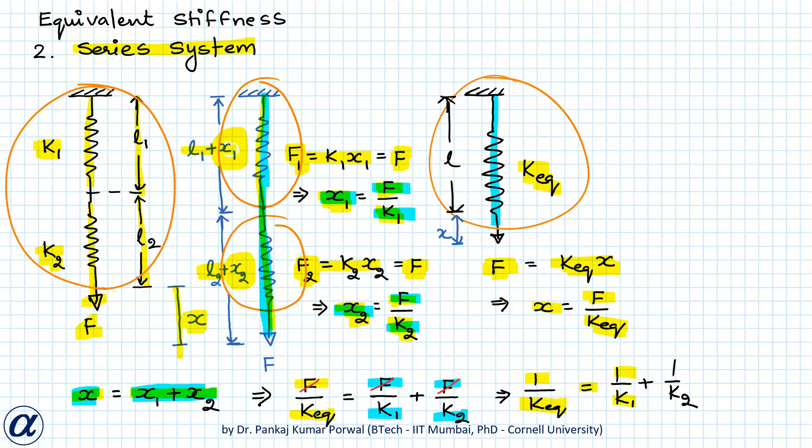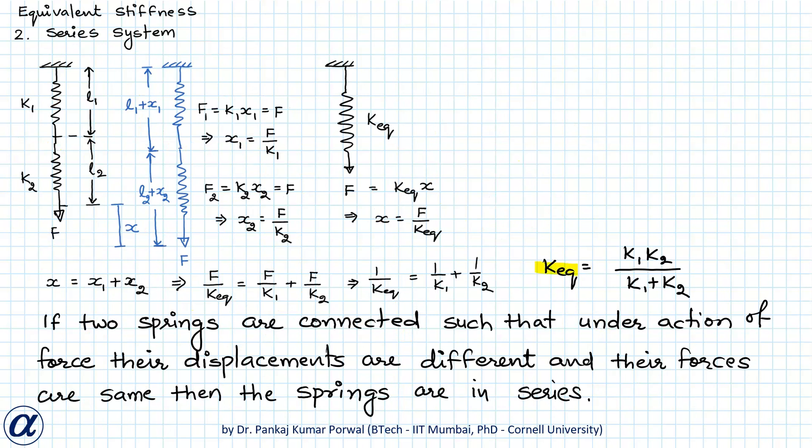So I get 1 upon k equivalent equals to 1 upon k1 plus 1 upon k2, and this I can also write as k equivalent equals to k1 k2 upon k1 plus k2. And here note that it is not the appearance of the springs being in series that makes them in series, but what makes them in series is they both carry same force and their stretchings are different. So if two springs are connected such that under action of force their displacements are different and their forces are same.